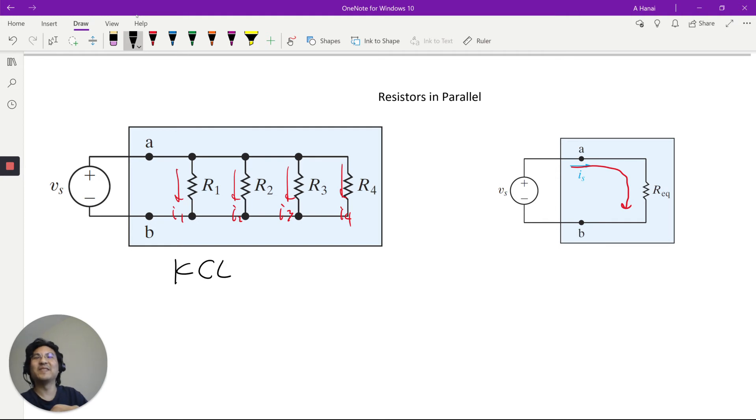Let's go KCL. How about at node A? Okay, so let's say going out of the node is positive. So that means this is the source current, just like this one. This one. So that would be negative. And then the rest of them all positive.